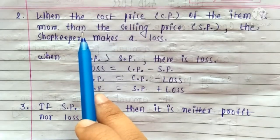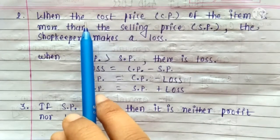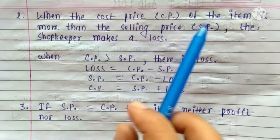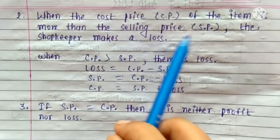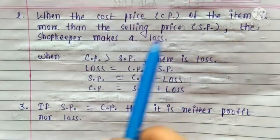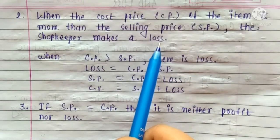Now we discuss what is a loss. When the cost price of the item is more than the selling price, the shopkeeper makes a loss.